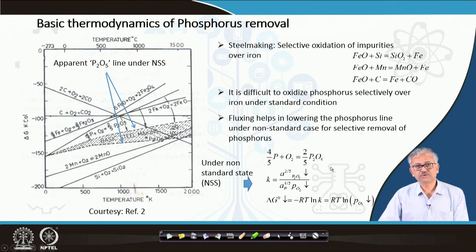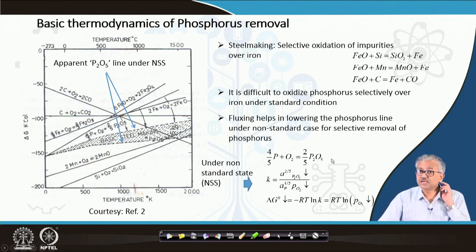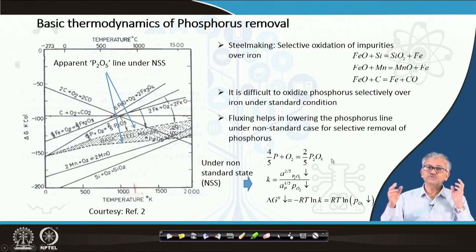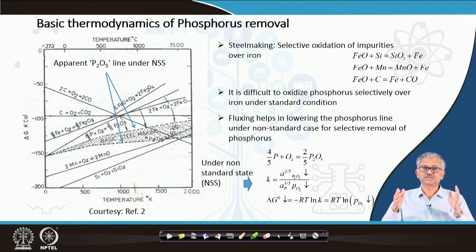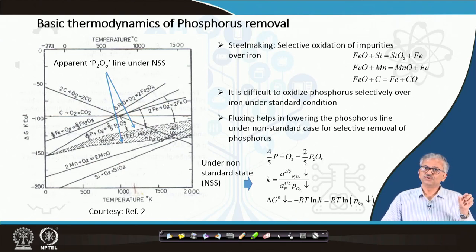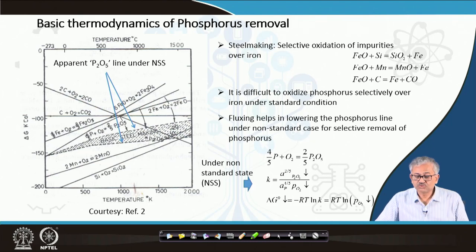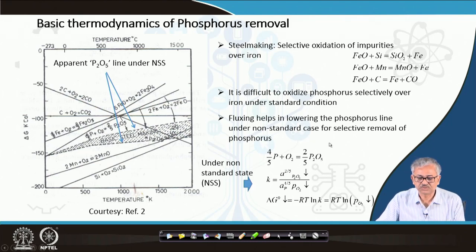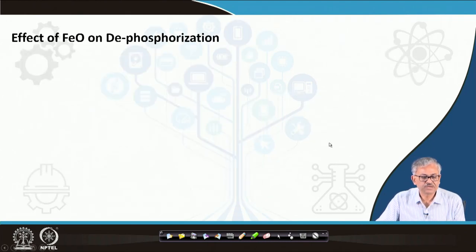This is a very important point. That is why everywhere you see BOF — Basic Oxygen Furnace. You are giving oxygen, but basic is important. Unless you make the slag basic, you cannot remove the phosphorus. A basic slag is an essential requirement for phosphorus removal.